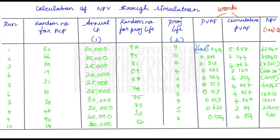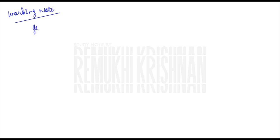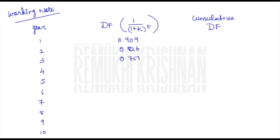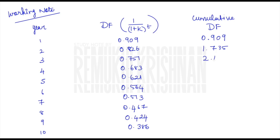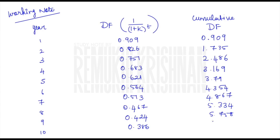From the simulation results, you can identify which combination of annual cash flow and project life gives the maximum NPV, and which gives the minimum NPV. This is the working note: find the present value annuity factor for 10% for each year up to 10 years using the formula. Then take the cumulative sum of these discount factors to get the cumulative discount factor. These cumulative discount factors are then used in the previous table to solve the problem easily.